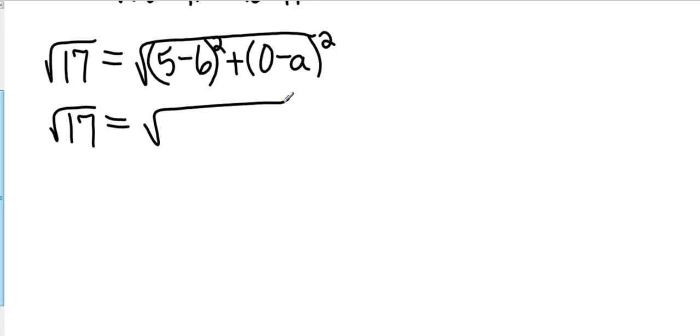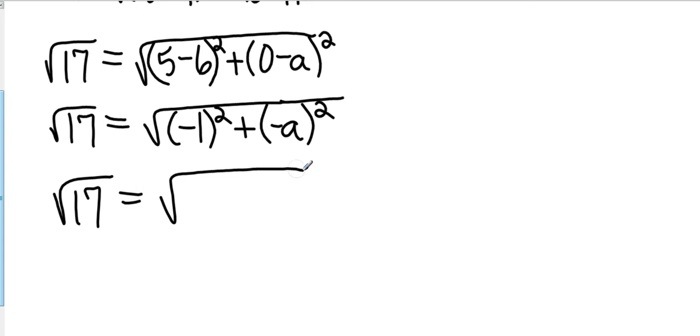What is 5 minus 6? That's going to be negative 1. And 0 minus a, that's going to be negative a. Okay, now I've got to be careful here. Negative 1 times negative 1 is 1, and negative a squared means negative a times negative a, which is going to be positive a squared.